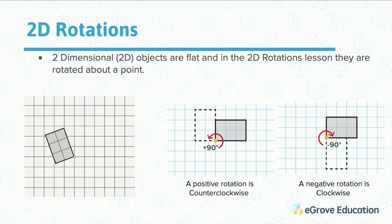First, two-dimensional objects are flat. When we rotate them, they're typically rotated about a point or a pivot point. In the app, that's represented by a yellow dot.